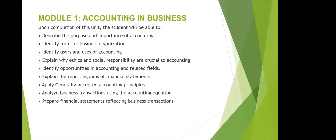Module 1 covers accounting and business. This module will describe the purpose and importance of accounting, identify different forms of business, identify users of accounting information, explain the structure of responsibility and internal control, identify opportunities in accounting related to the firm, explain financial statement reporting, apply generally accepted accounting principles, and analyze business transactions using the accounting equation.